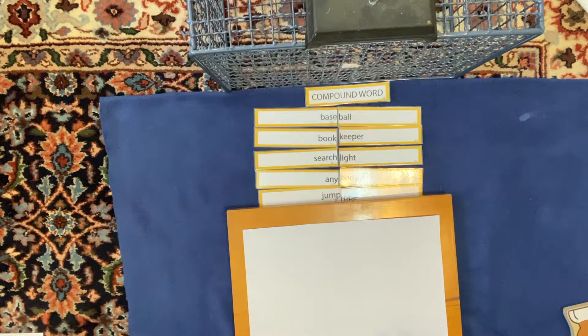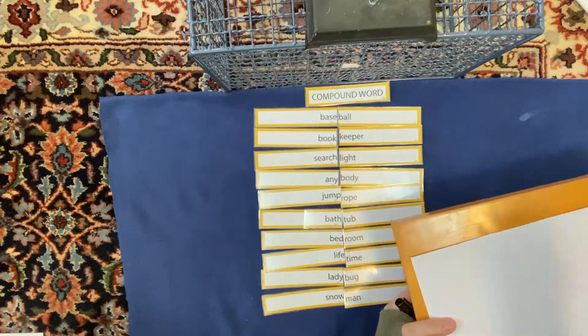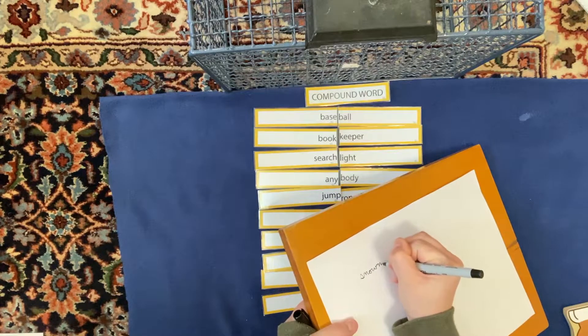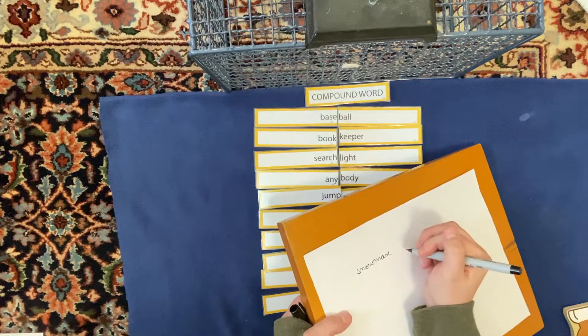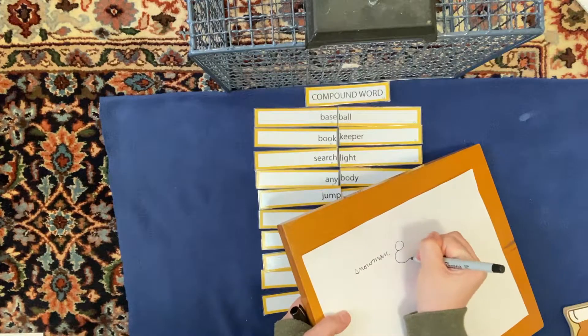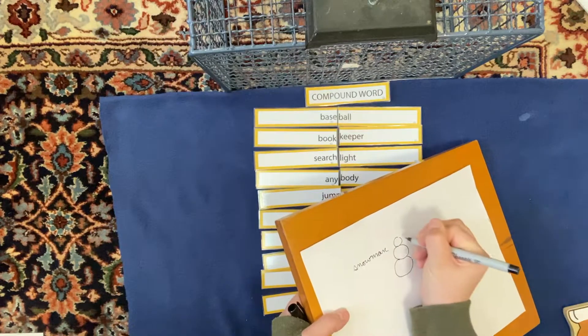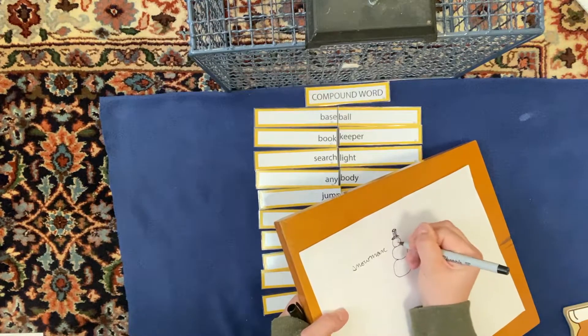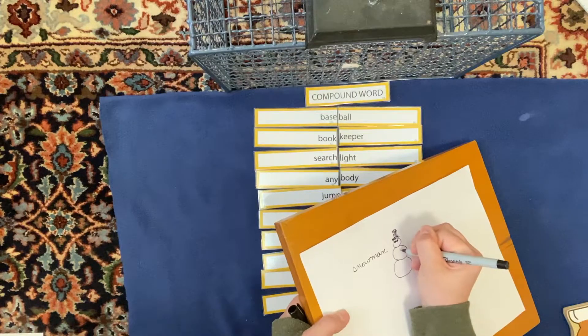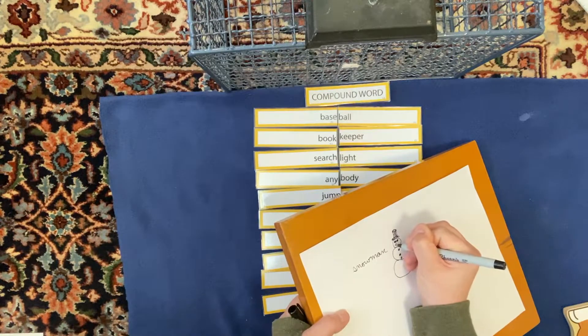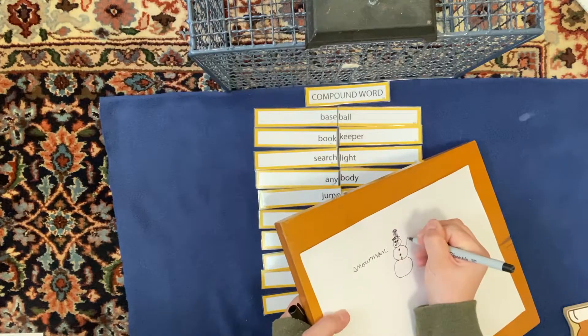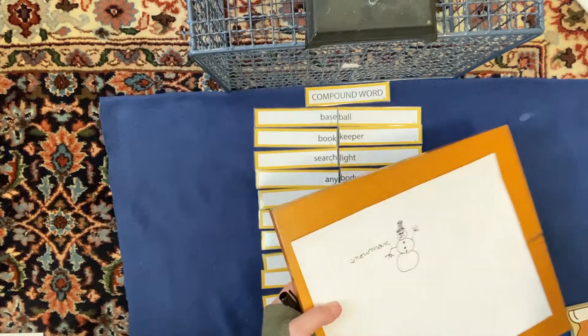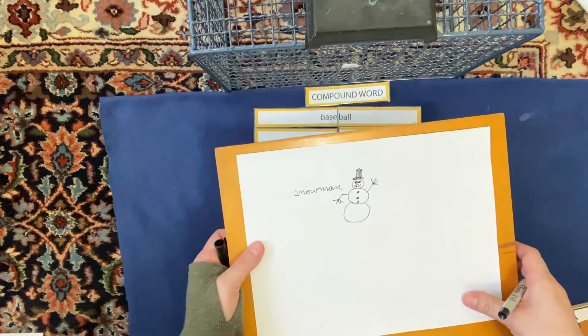I'm just going to put this like this. I'm going to do, I think I'm going to do snowman. Remember, it's one word. And I'm going to draw a snowman. So, here's his hat. And he's got little coal eyes. And that. He's got a carrot for a nose. And he's got stick arms. Look. There. I've written a compound word and I drew a picture.